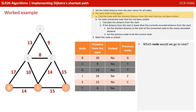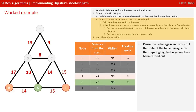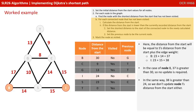Node S would be next with the shortest distance from start of 23. The nodes connected to S that have not been visited are B and I. S's distance of 23 plus the edge values gives 37 for B and 38 for I. For node B, 37 is greater than the current value of 30, so no update required. Similarly, 38 is greater than the 24 stored for I, so no update needed there either.